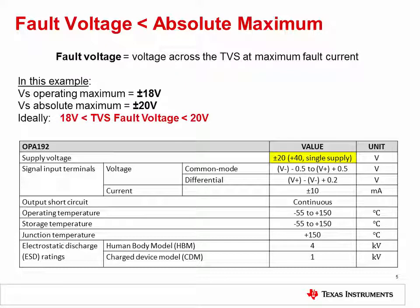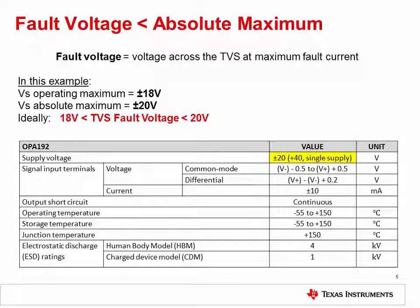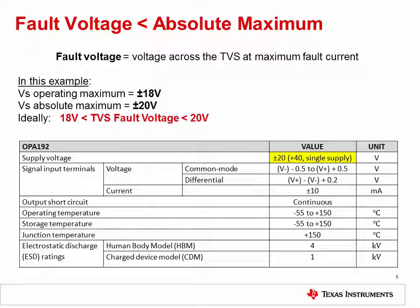Let's take a look at the absolute maximum specifications for the OPA192. The OPA192's operating voltage is plus or minus 18 volts, and the absolute maximum for this device is plus or minus 20 volts. So if the amplifier supply is normally at plus or minus 18 volts, then the TVS diode must be fully off at 18 volts. However, the TVS diode needs to turn on to protect the amplifier before the supply reaches the absolute maximum of plus or minus 20 volts. The fault voltage is the voltage across the TVS diode when it is turned on and protecting the device, and is dependent on the current that flows during the overvoltage fault condition. Ideally, this fault voltage should be kept lower than the absolute maximum voltage.